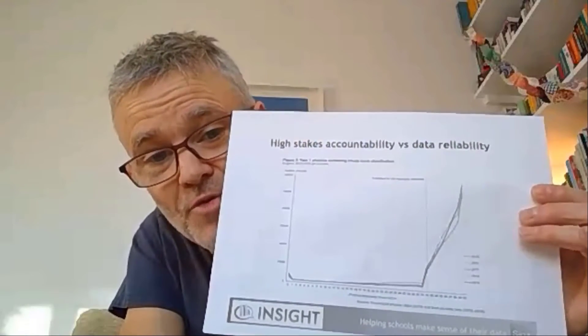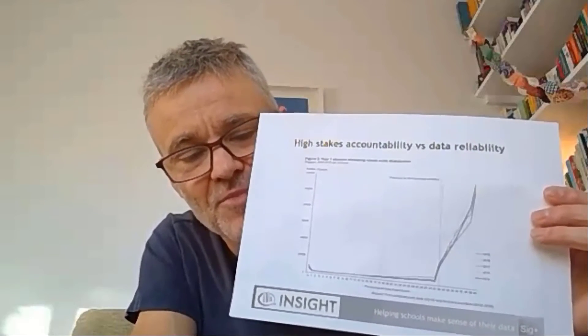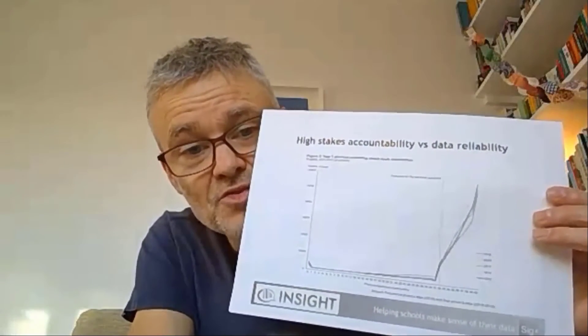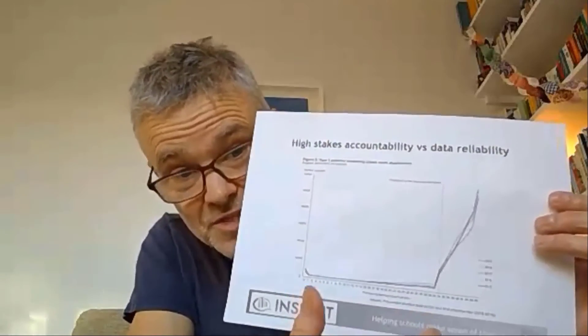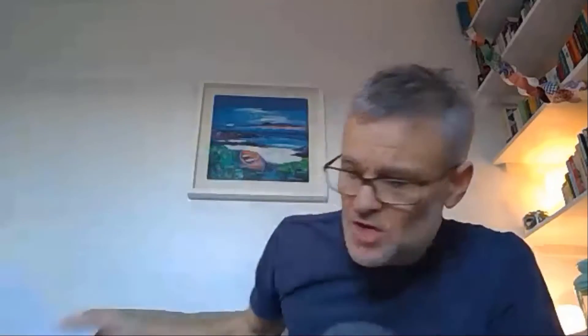That graph is absolutely nuts — the most bonkers graph I have ever seen. My wife teaches A-level maths and she'd think it was ridiculous. It goes up a cliff at 32 because that's the pass mark. What would that graph look like if no one collected the data? It wouldn't look like that. You can't have reliable assessment data and use it for performance management — unless you very tightly control conditions, as we try to do with key stage two and GCSEs.